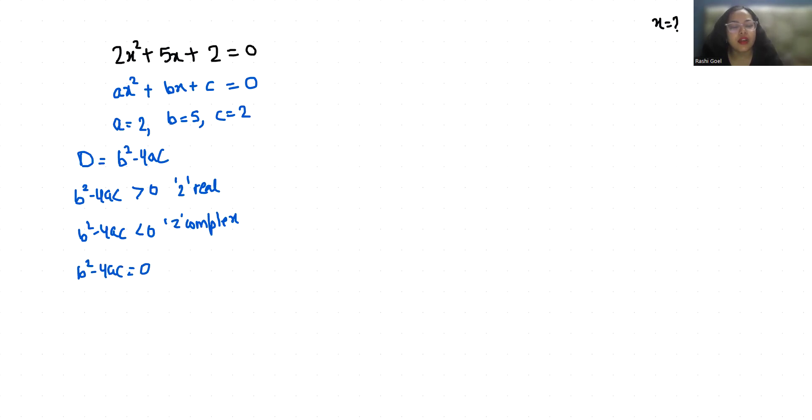So let's find out. D = b² - 4ac. b is 5 square minus 4 times 2 times 2. 5 square is 25 minus 4 times 2 is 8, 8 times 2 is 16. 25 minus 16 is 9, which is positive, greater than 0, that means 2 real solutions exist.